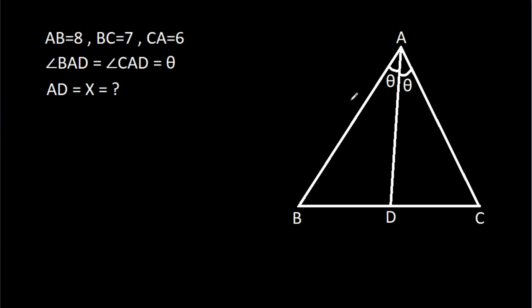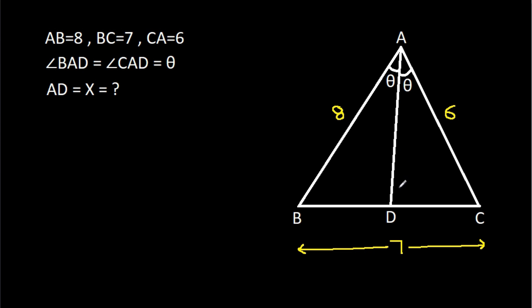In this video, we have been given that AB is 8, BC is 7, and CA is 6. Angle BAD is theta, angle CAD is theta, and AD is X. We have to find X.